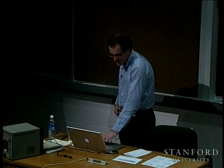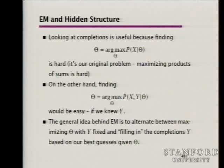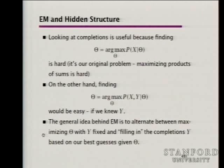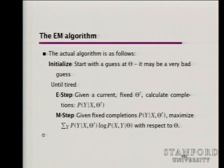There are two data likelihoods: the actual observed data likelihood P(X|theta), and the complete data likelihood P(X,Y|theta) when we give values to Y. The idea of the EM algorithm is that we want to maximize the observed data likelihood, but we're going to use completions to make that easier to do. It's hard to work out the observed data likelihood when we have products of sums. On the other hand, it's easy to work out the complete data likelihood if we know the Ys. The general idea is to alternate: assume some completions, work out good values for theta, then use theta to work out likely completions, and repeat.